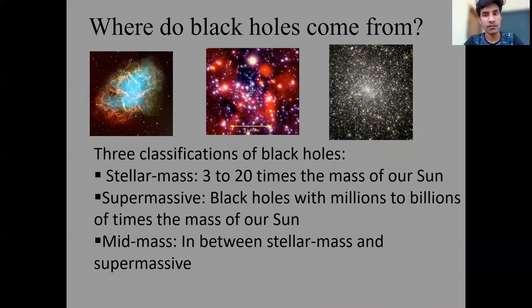Now, where do black holes come from? How do black holes form? Black holes usually come from explosion of stars or collapse of stars. There are three types: stellar mass rated 20 times the mass of the Sun, supermassive black holes with millions to billions times the mass of our Sun, and mid-mass in between the stellar mass and supermassive mass.